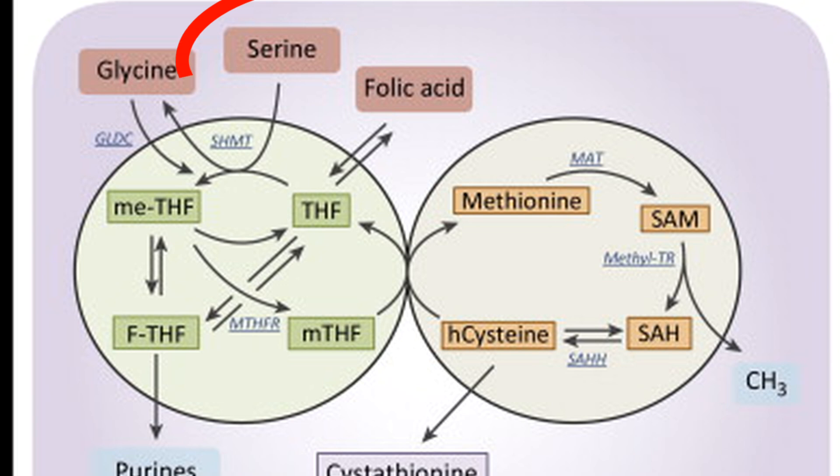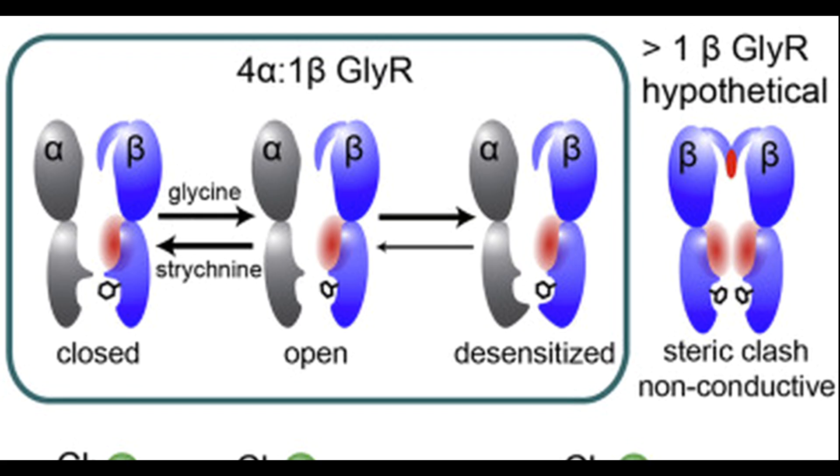Glycine is synthesized from serine by the enzyme serine hydroxymethyltransferase. Once released into the synapse, glycine binds to glycine receptors or GLYRs on the postsynaptic neuron. These receptors are ionotropic and mediate fast inhibitory synaptic transmission, similar to GABA-A receptors.